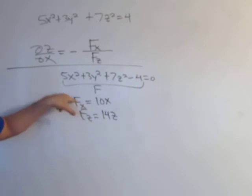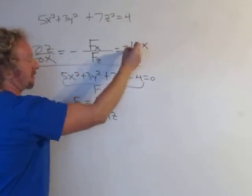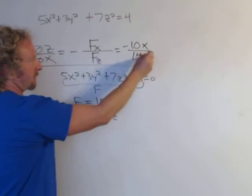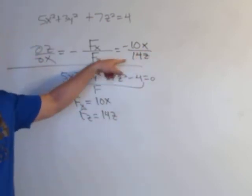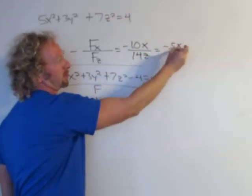And the final answer, just plug these back into the formula up here. So it would be, looks like negative 10x over 14z. And I guess we could simplify it in this case. It would be negative 5x over 7z. So this is negative 5x over 7z.